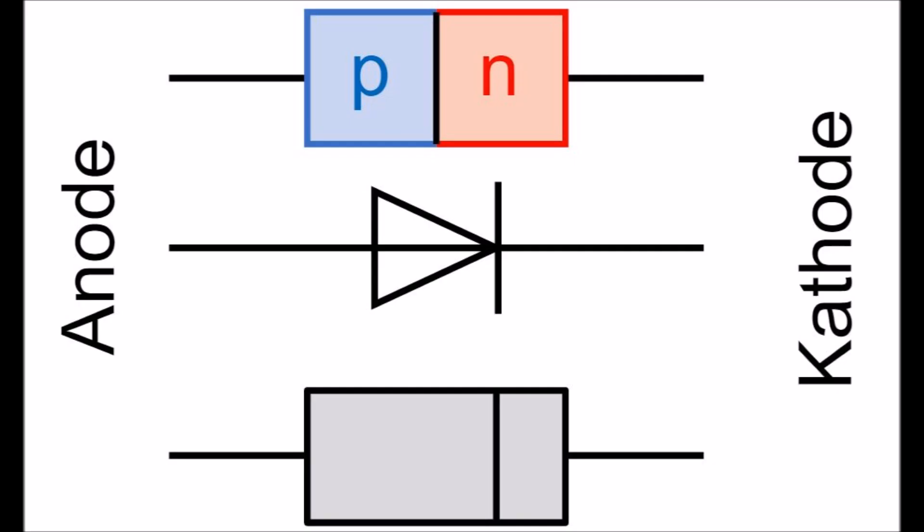Diodes are critical components for radios. They allow electrical current to flow more easily in one direction than the other. Since modern diodes weren't available to soldiers in World War II, the soldiers came up with inventive ways to create the same effect.